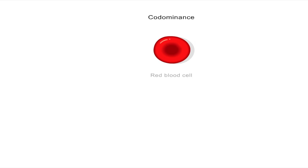Another modification to Mendel's complete dominance is codominance. This occurs when the heterozygous individual exhibits the phenotype of both homozygotes. This differs from incomplete dominance, in which the heterozygous individual exhibits a phenotype intermediate between the two homozygotes. In codominance, there is no dominance or recessiveness of an allele; instead, two dominant alleles are fully expressed at the same time.